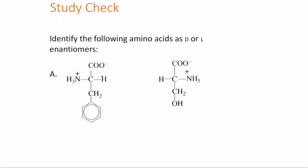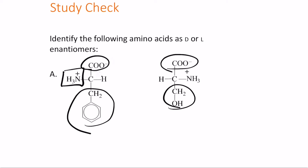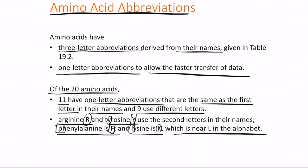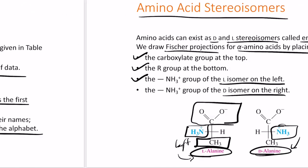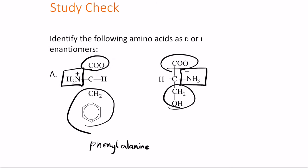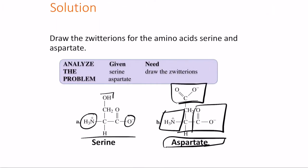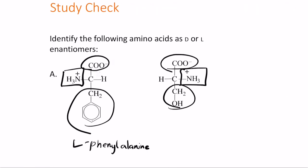For example, if COO− is on top and the R group (phenyl-CH2) is on the bottom with NH3+ on the left, this is L-phenylalanine. If COO− is on top and the R group (CH2OH) is on the bottom with NH3+ on the right, this is D-serine. The positioning of the NH3+ group determines whether the isomer is D or L.